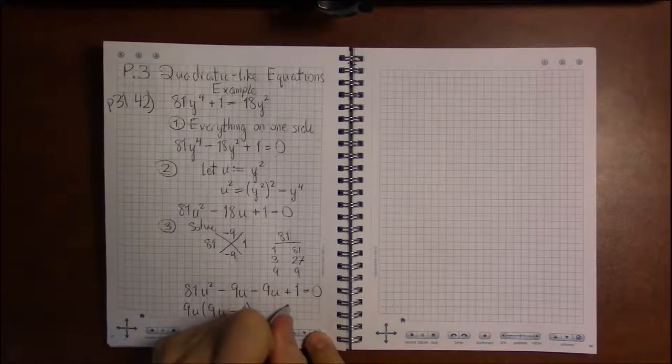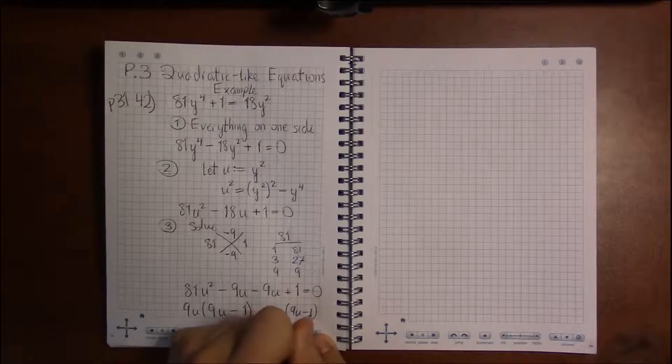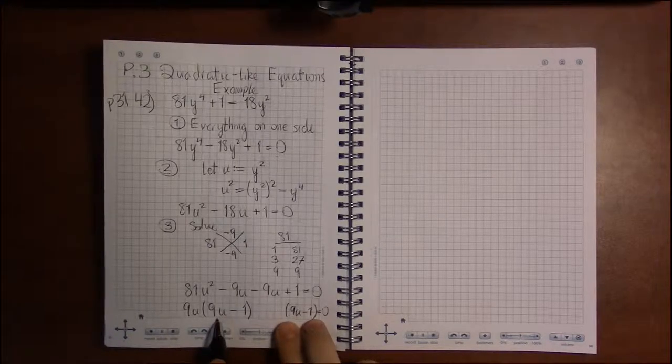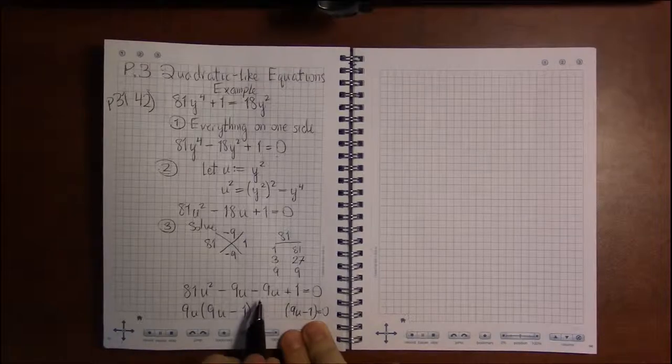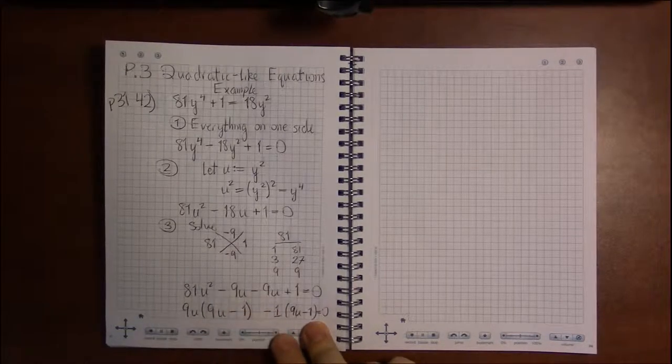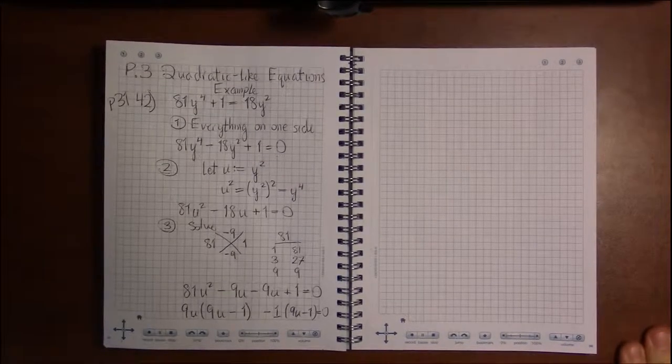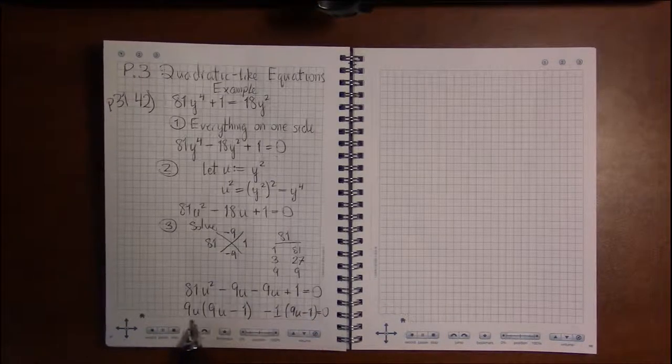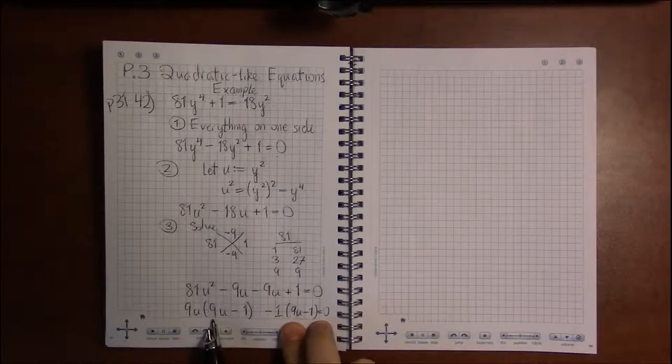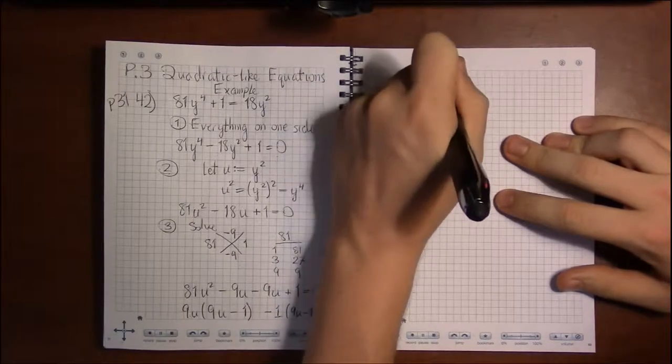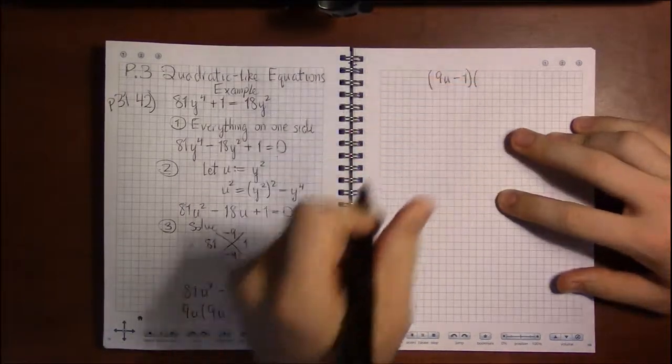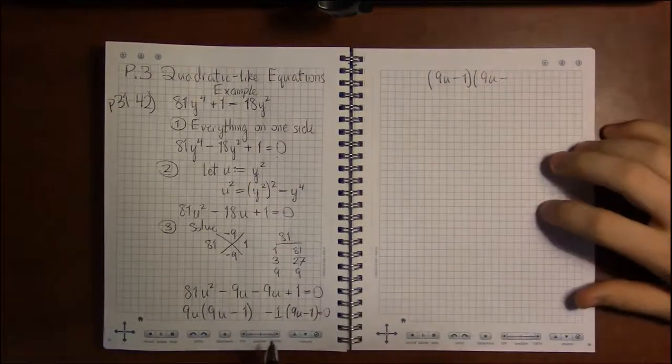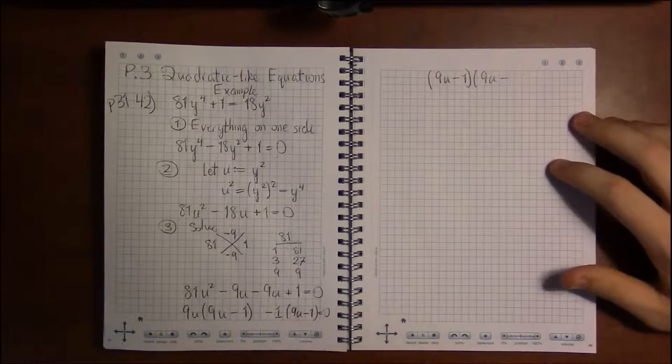Now, when I'm done factoring this out, I need to get 9u minus 1. Because I need what's inside these two pairs of parentheses to be the same. So the only way I can do that is if I pull a minus 1 out. That'll leave me minus 1 times 9u, minus 1 times minus 1 is a plus 1. Excellent. The things in parentheses are the same. So I can pull those out. And I'm left with 9u on the first term. And on the second term, pulling the 9u minus 1 out, leaves me with minus 1.